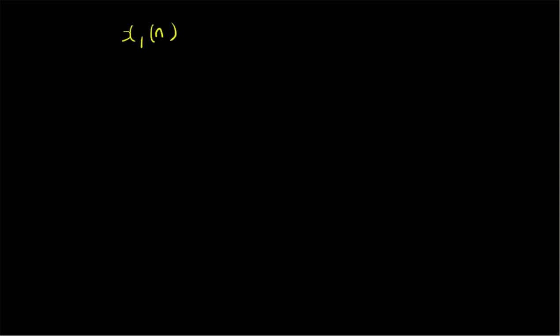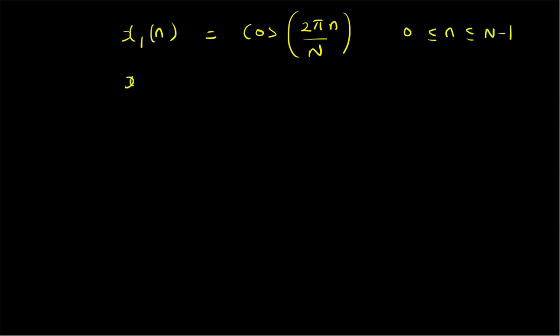Let us define the signals: x1(n) is equal to cos(2πn/N), where the value of small n varies from 0 to N minus 1, that is n is an integer starting at 0 and ending at N minus 1. Similarly, the signal x2(n) is given by sin(2π/N · n), where the values of small n are from 0 to N minus 1, and N is the length of the signal.